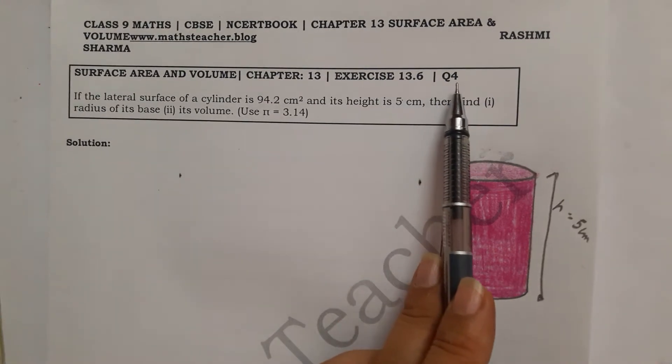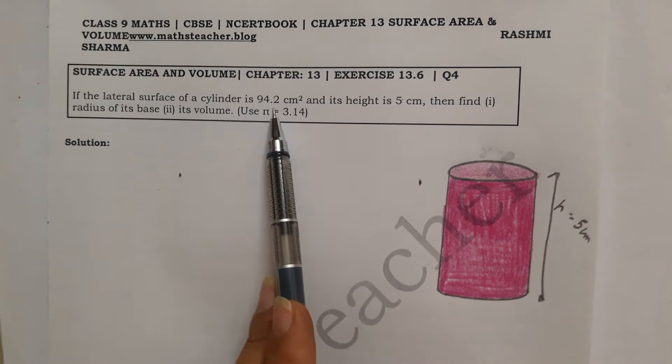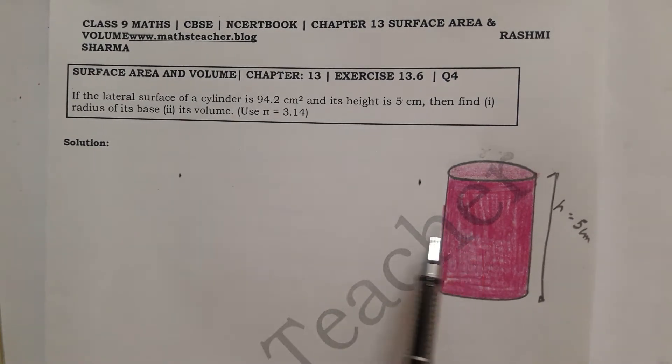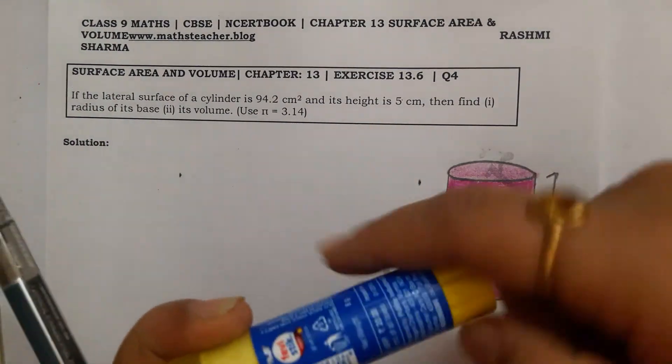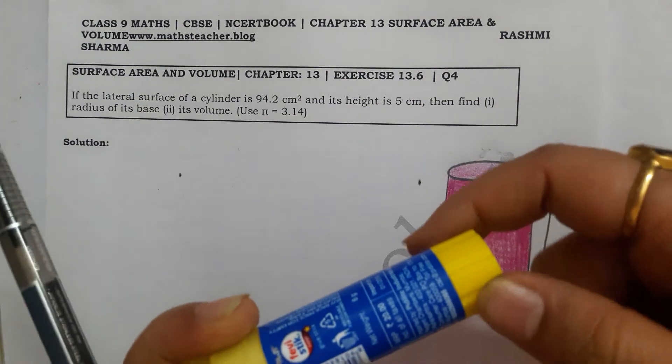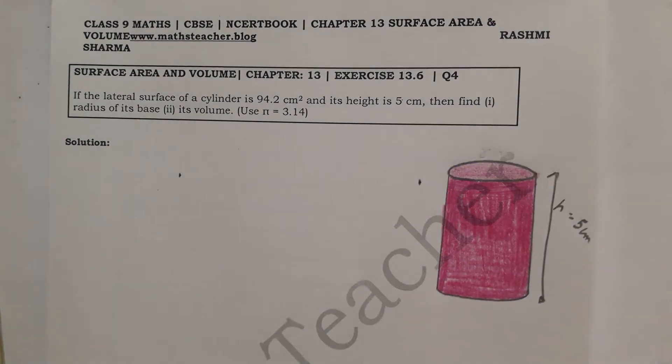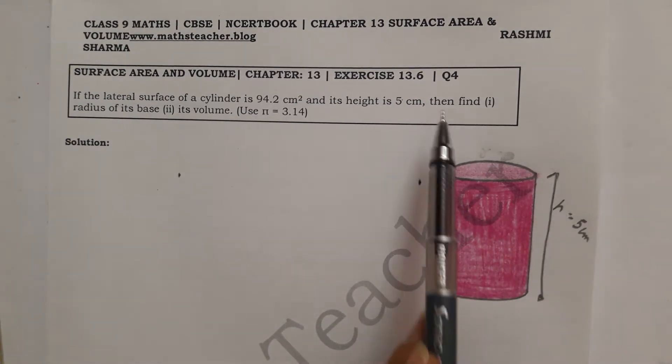If the lateral surface of a cylinder is 94.2 cm square, so lateral surface is like your curved surface in which you will not add top and bottom. This portion is called curved surface area and lateral surface area. This portion is given here as 94.2 cm square. Height is given 5 cm, then find